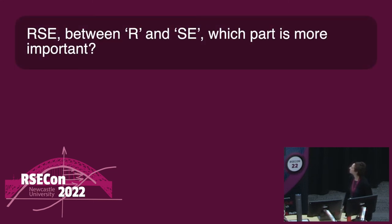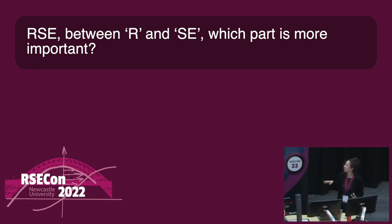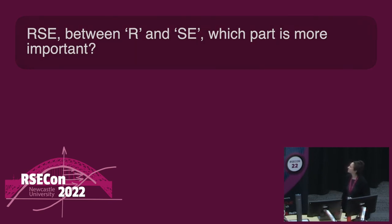Between the R — research — and SE — software engineering or engineer — in RSE, which part is more important? I'm not sure which part is more important. We do have research in the works on all SEs and not RSEs specifically, so maybe by comparing some of the results we'll be able to get an idea of that.